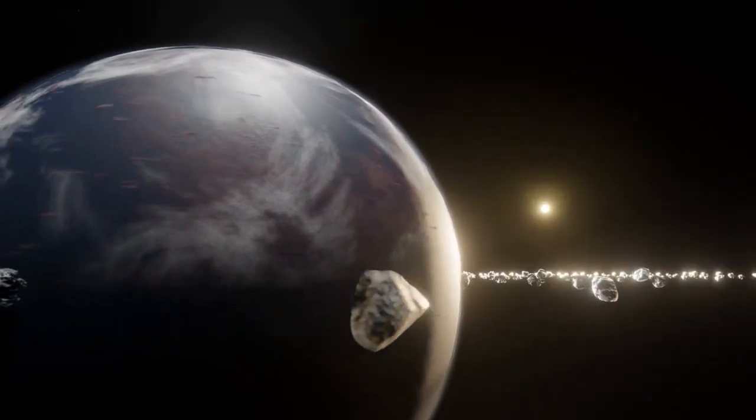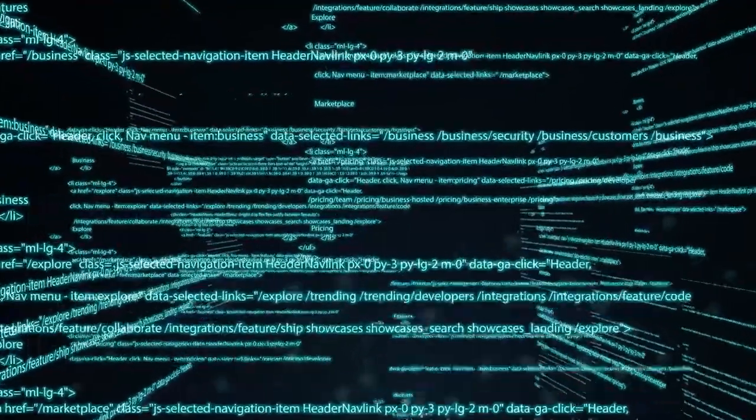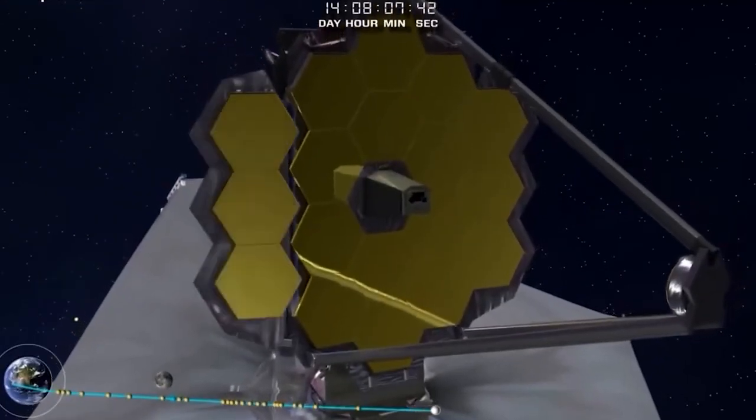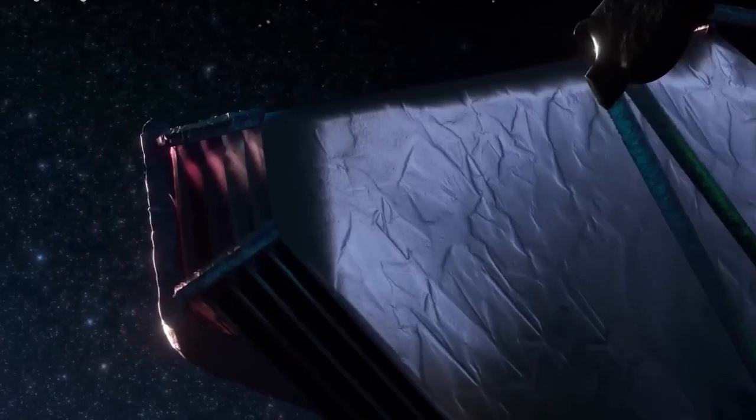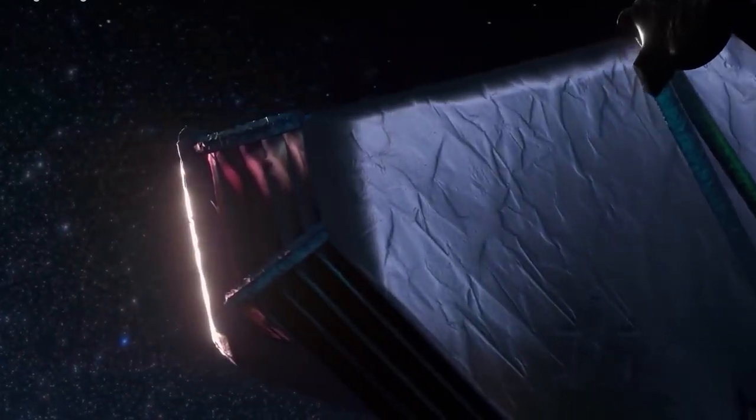For the calculations, the Exoplanet Analytic Reflected Light Curve, or ERL, open-source software source code is used, and the JWST Exposure Time Calculator, or ETC, is used to estimate how likely it is that the planet can be found.